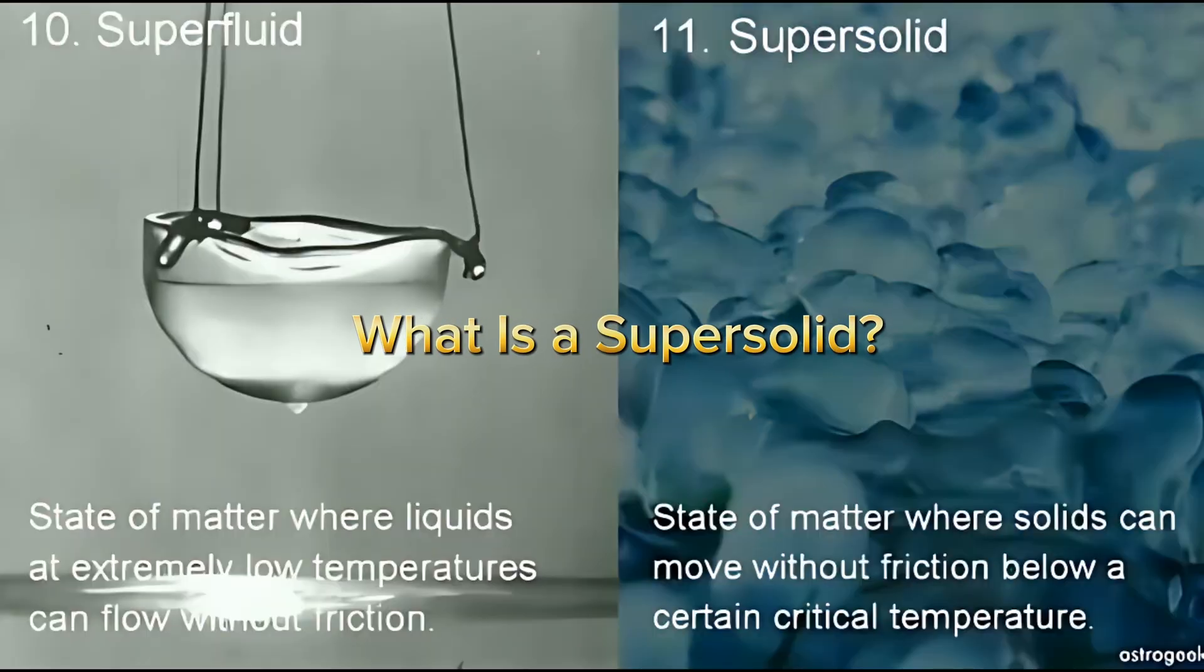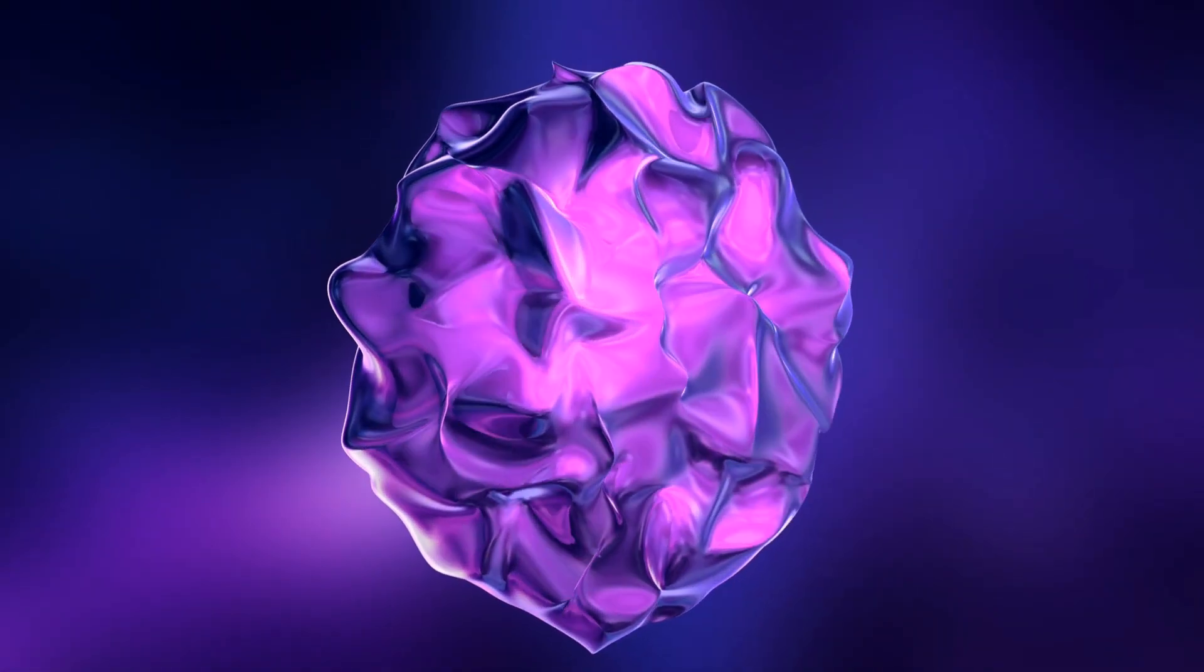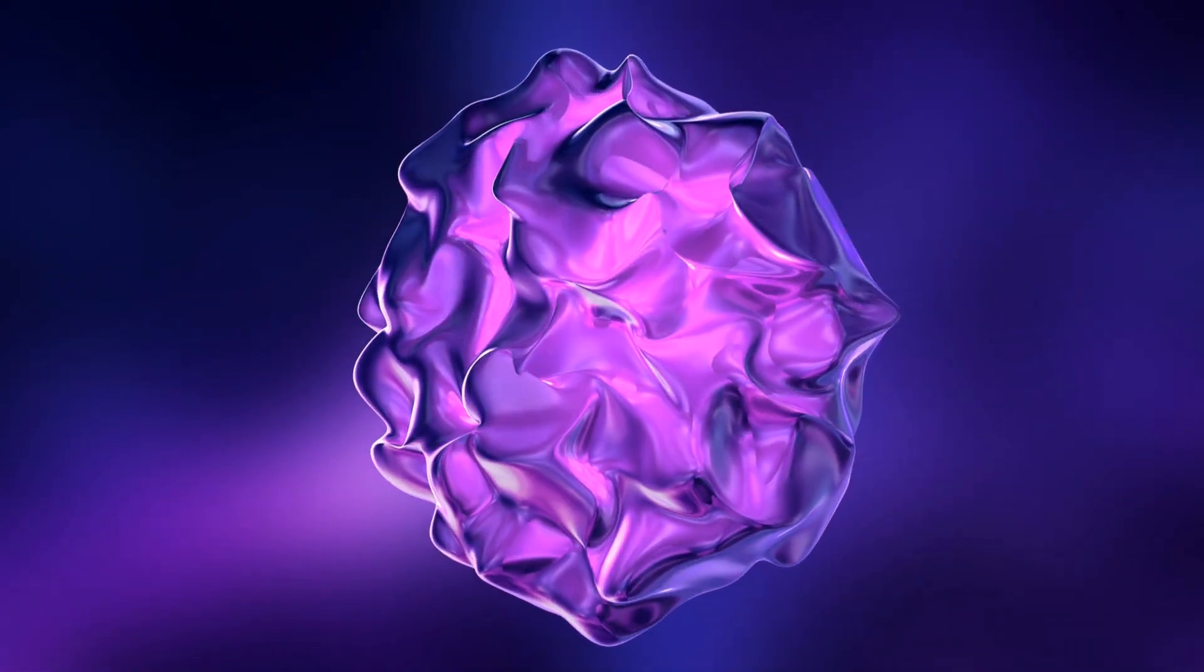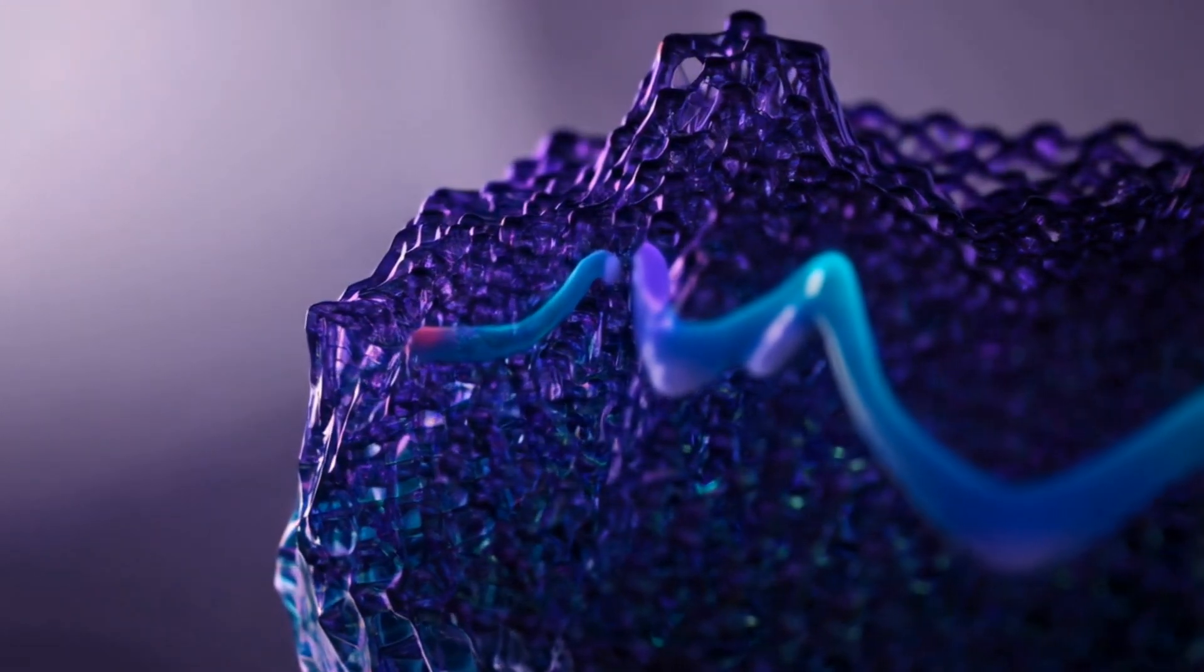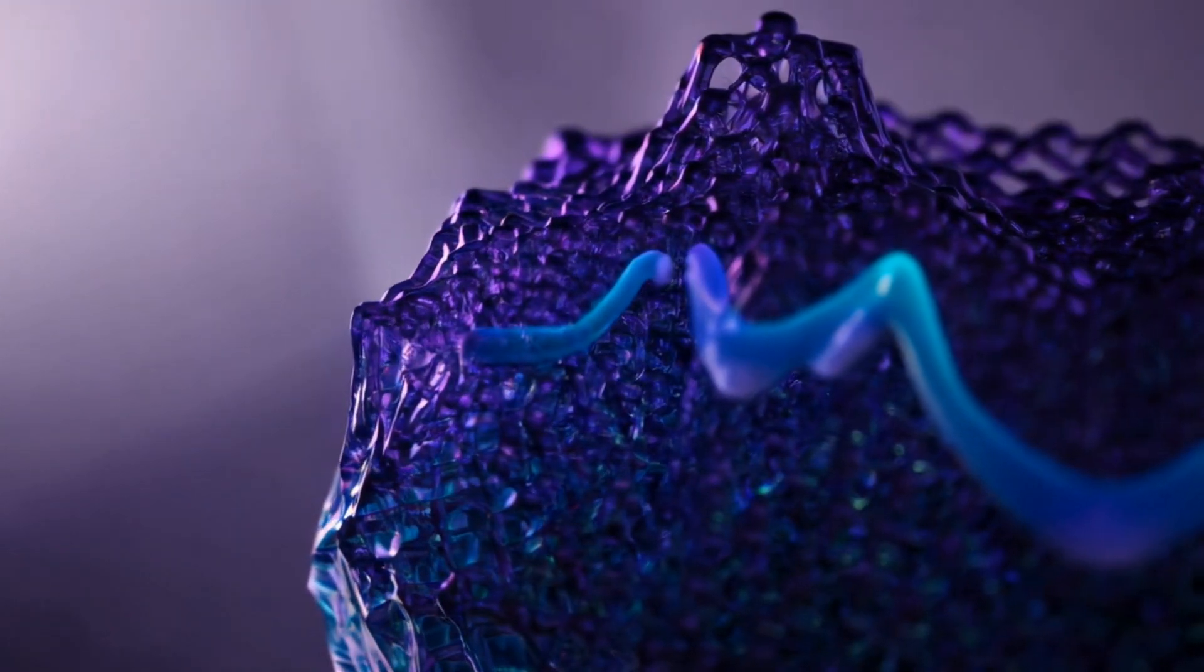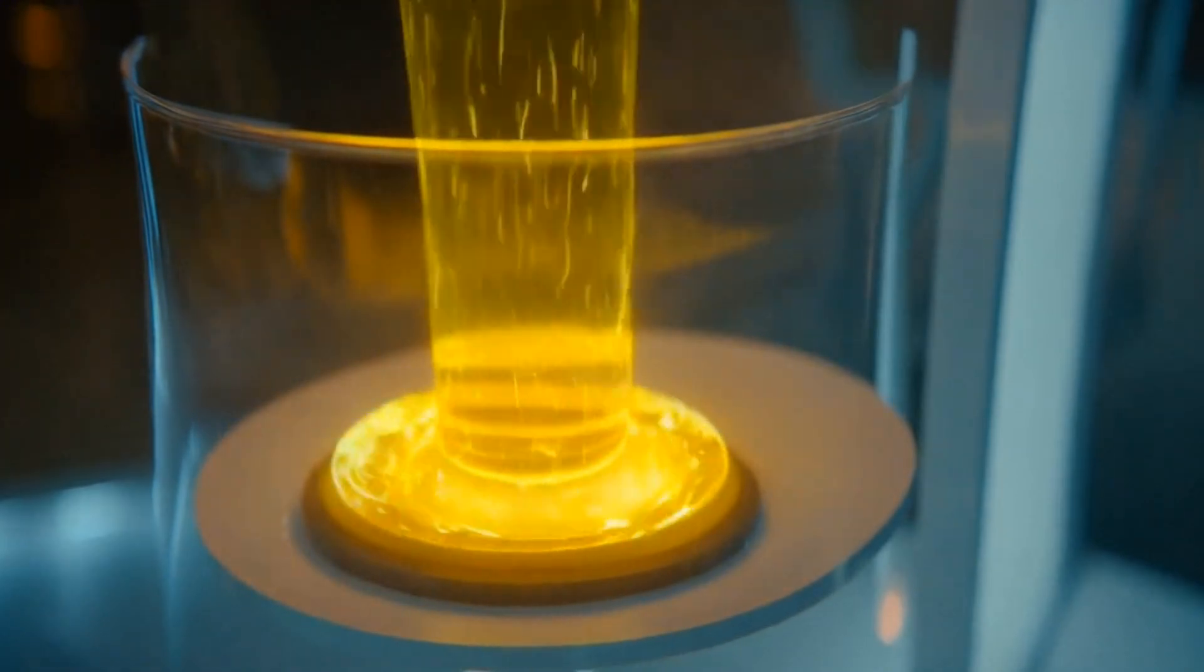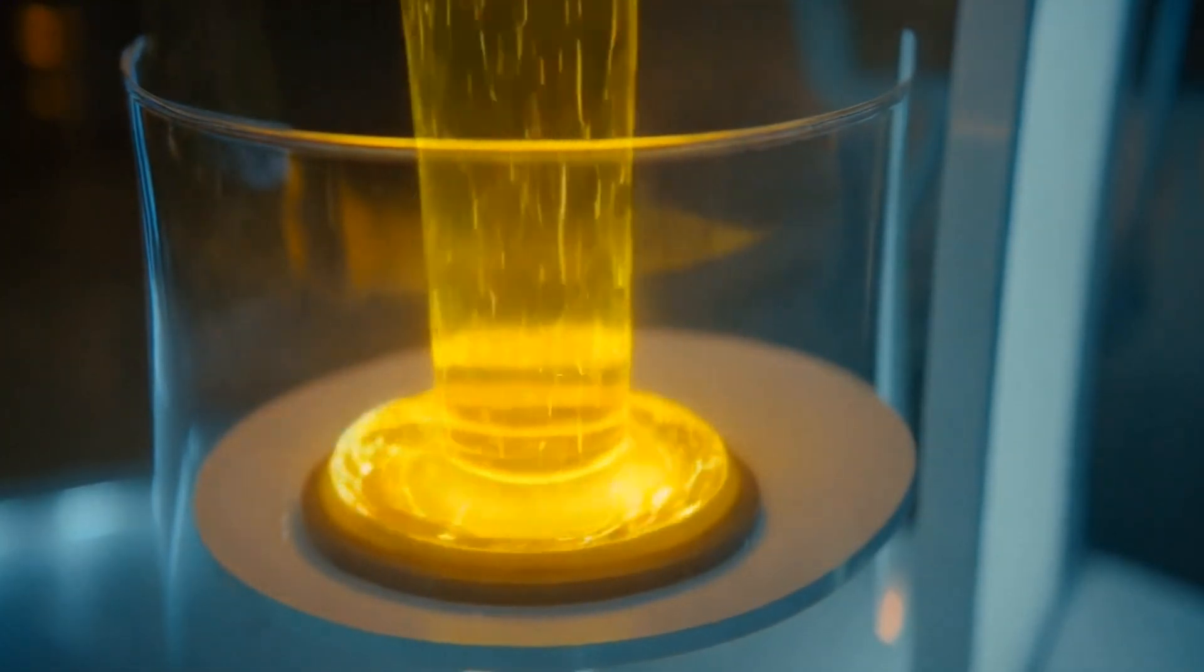What is a super-solid? A super-solid is a unique state of matter that behaves like both a solid and a super-fluid. It has the structure of a solid, meaning it holds a fixed shape, and the frictionless flow of a super-fluid, allowing it to move without resistance.